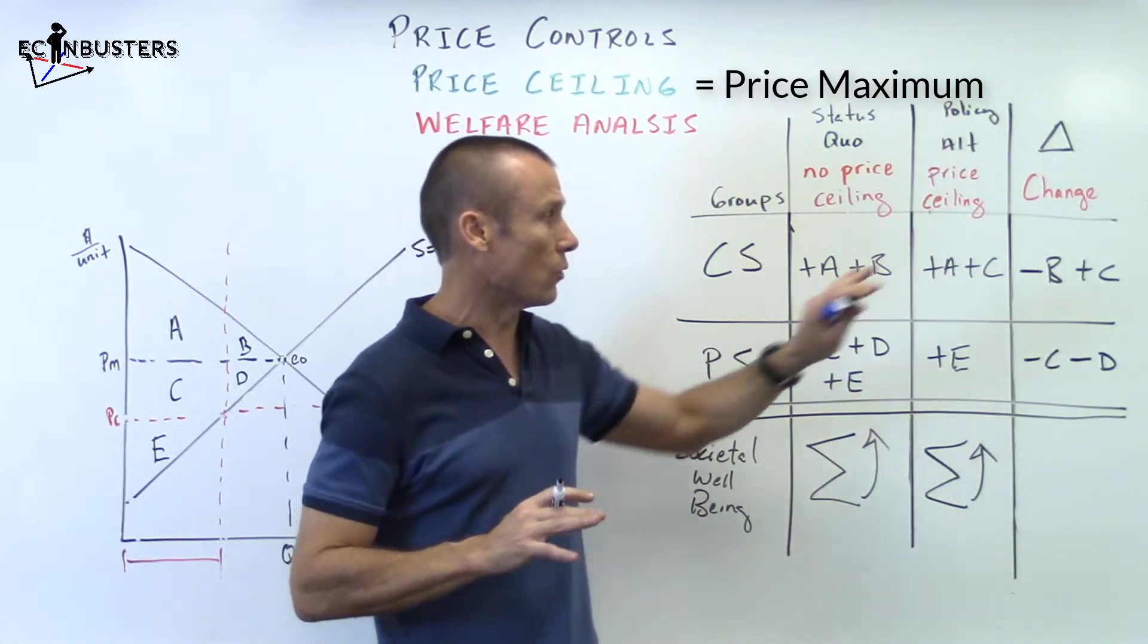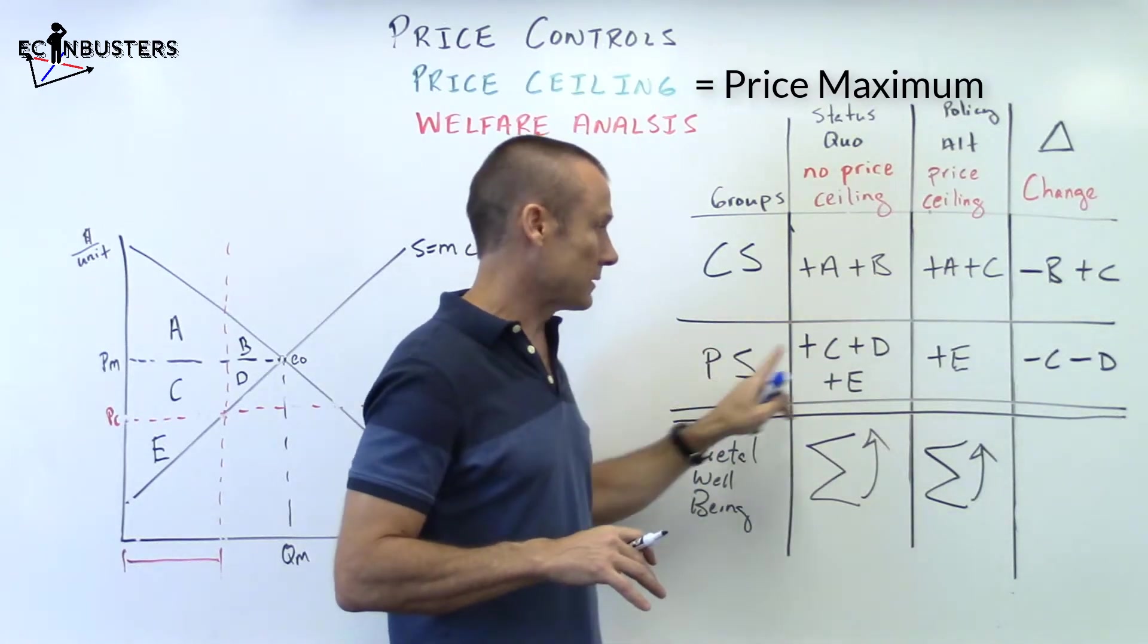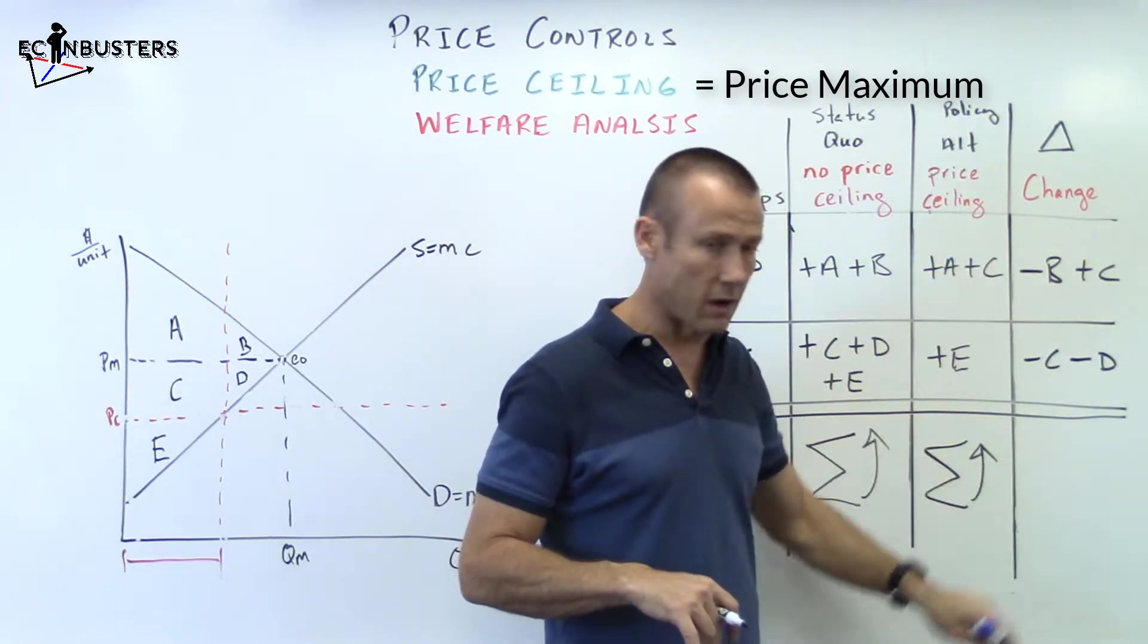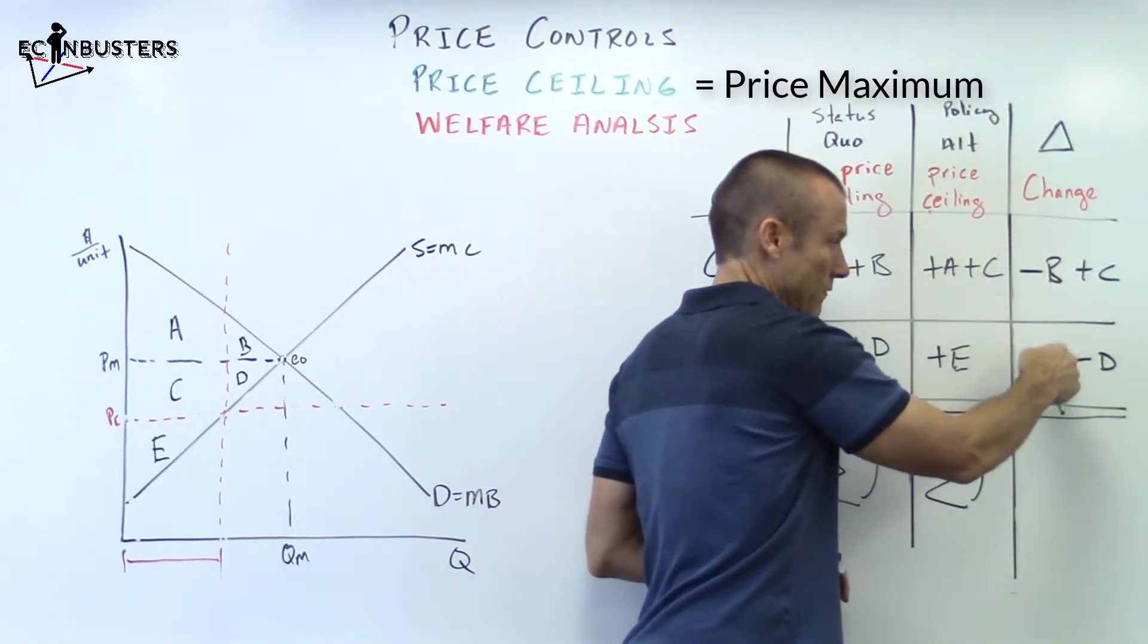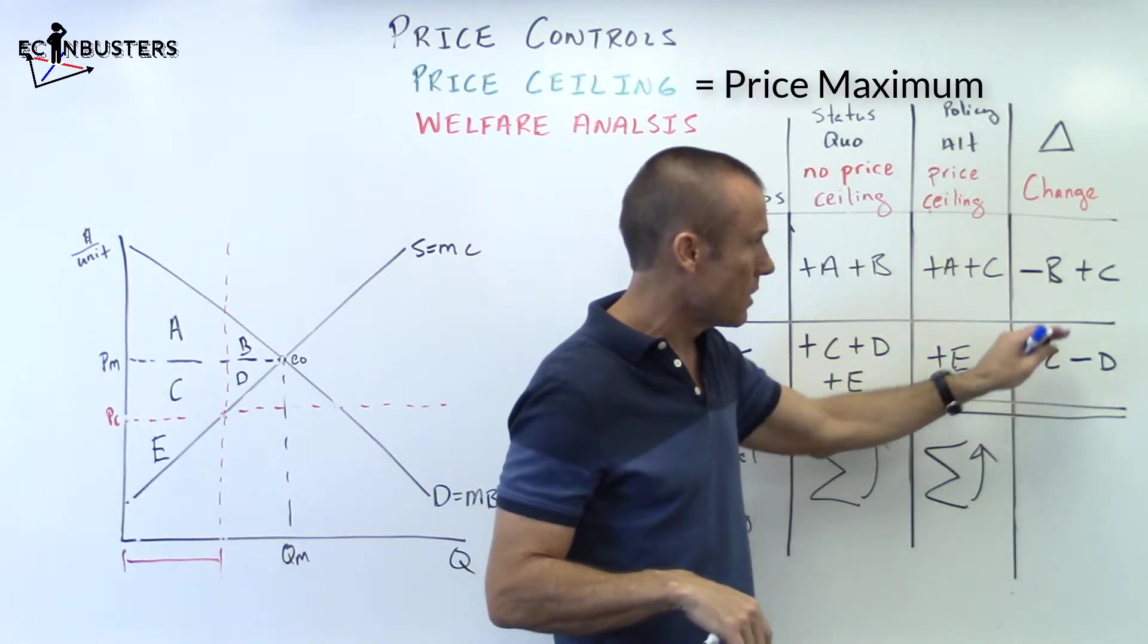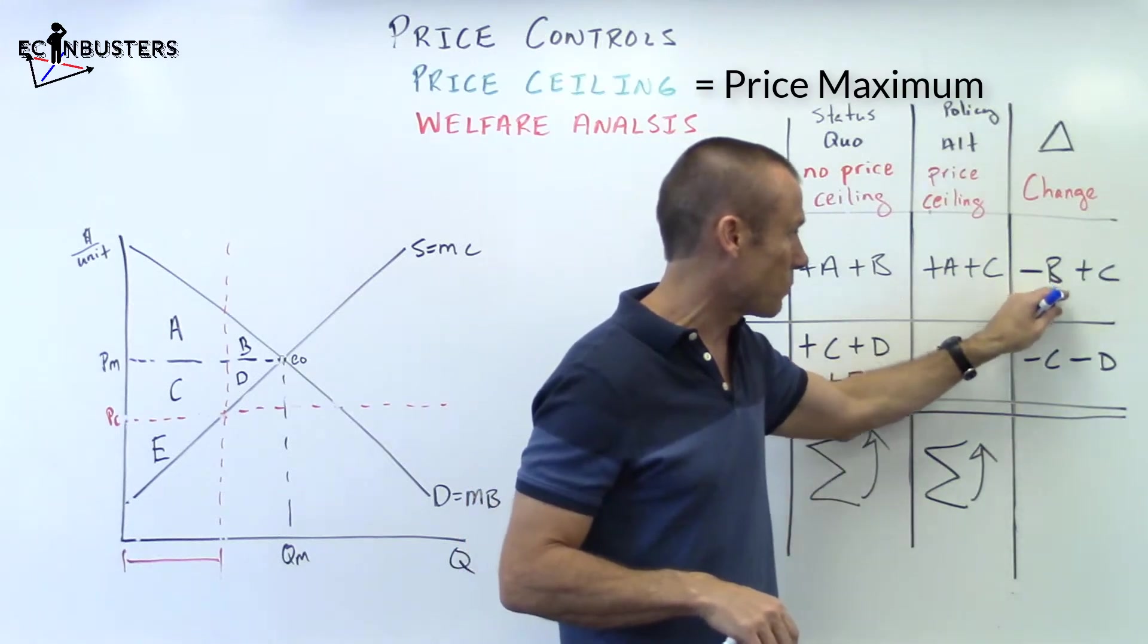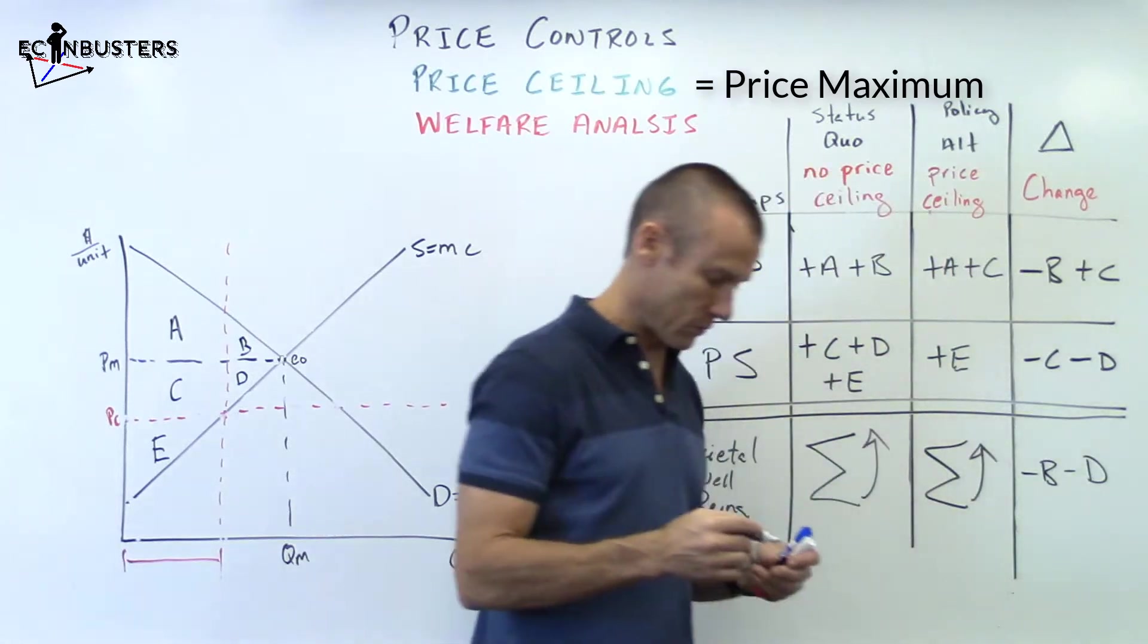So we've now shown the impact on the consumer, very important, and the impact on the producer. Now the most important of all, this one. I am going to do the sum. When I do the sum, sometimes I cross out the letters where I have a minus and a plus. I'm not going to cross it out because I want to remind us, hey, that's the difference for the consumer, that's the difference for the producer. But I do notice plus C, minus C. So those cancel. So I'm left with minus B, minus D.